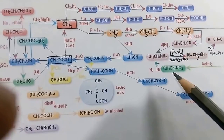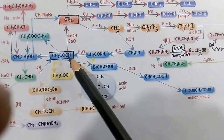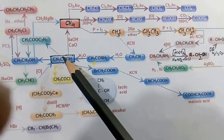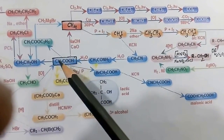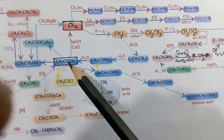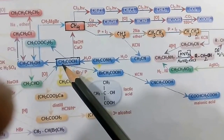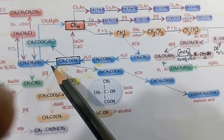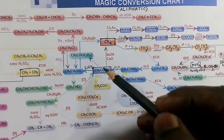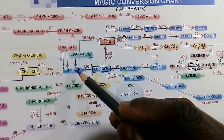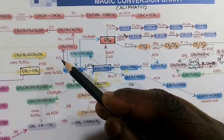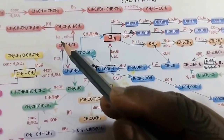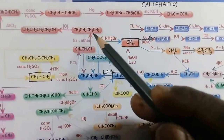Now let's look at ethanoic acid, or acetic acid — CH₃COOH — a very important compound with high synthetic value. Acetic acid can be reduced by lithium aluminum hydride or sodium amalgam in water, giving ethanol. Ethanol treated with PCl₃, PCl₅, or SOCl₂ gives ethyl chloride.